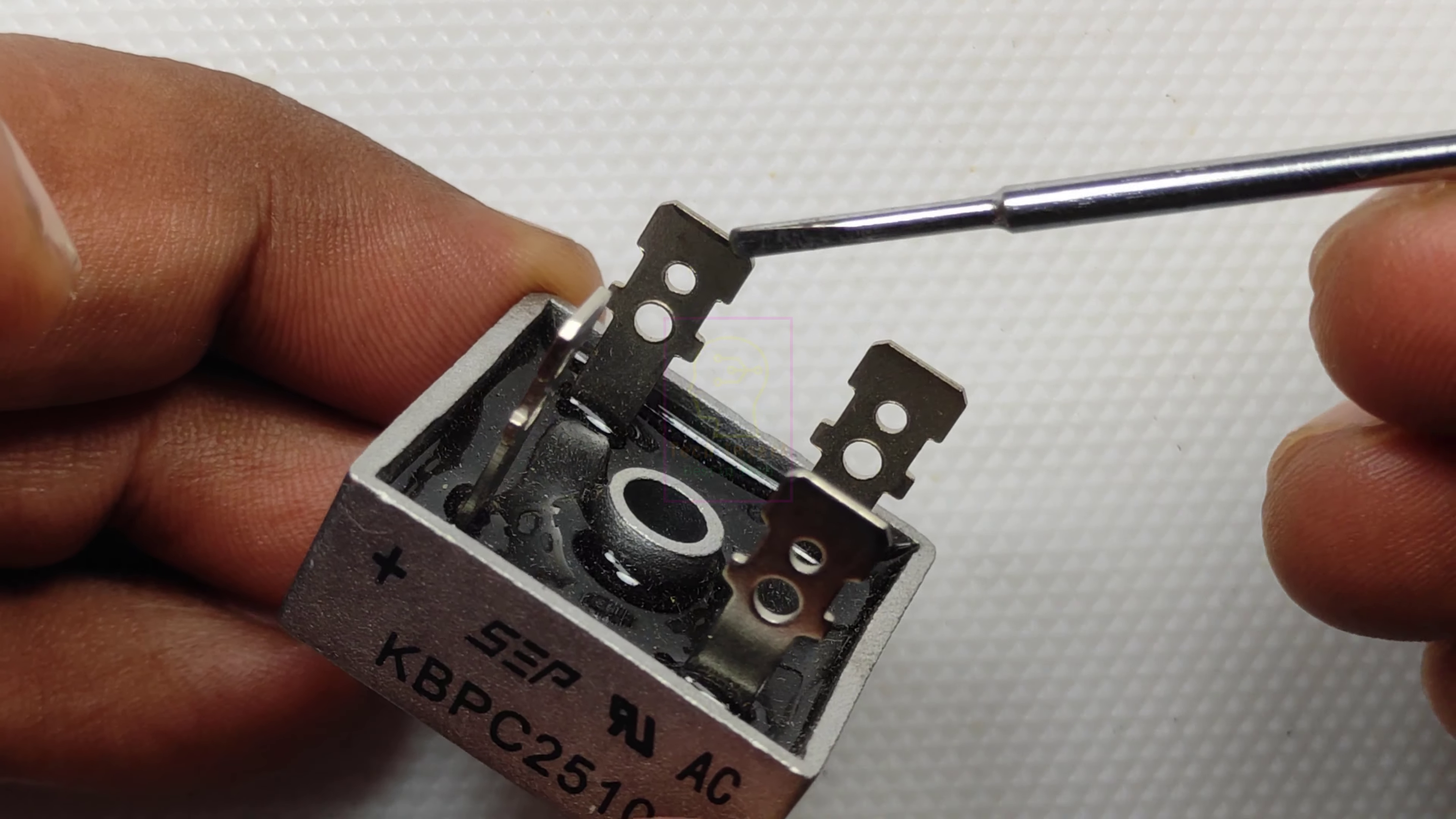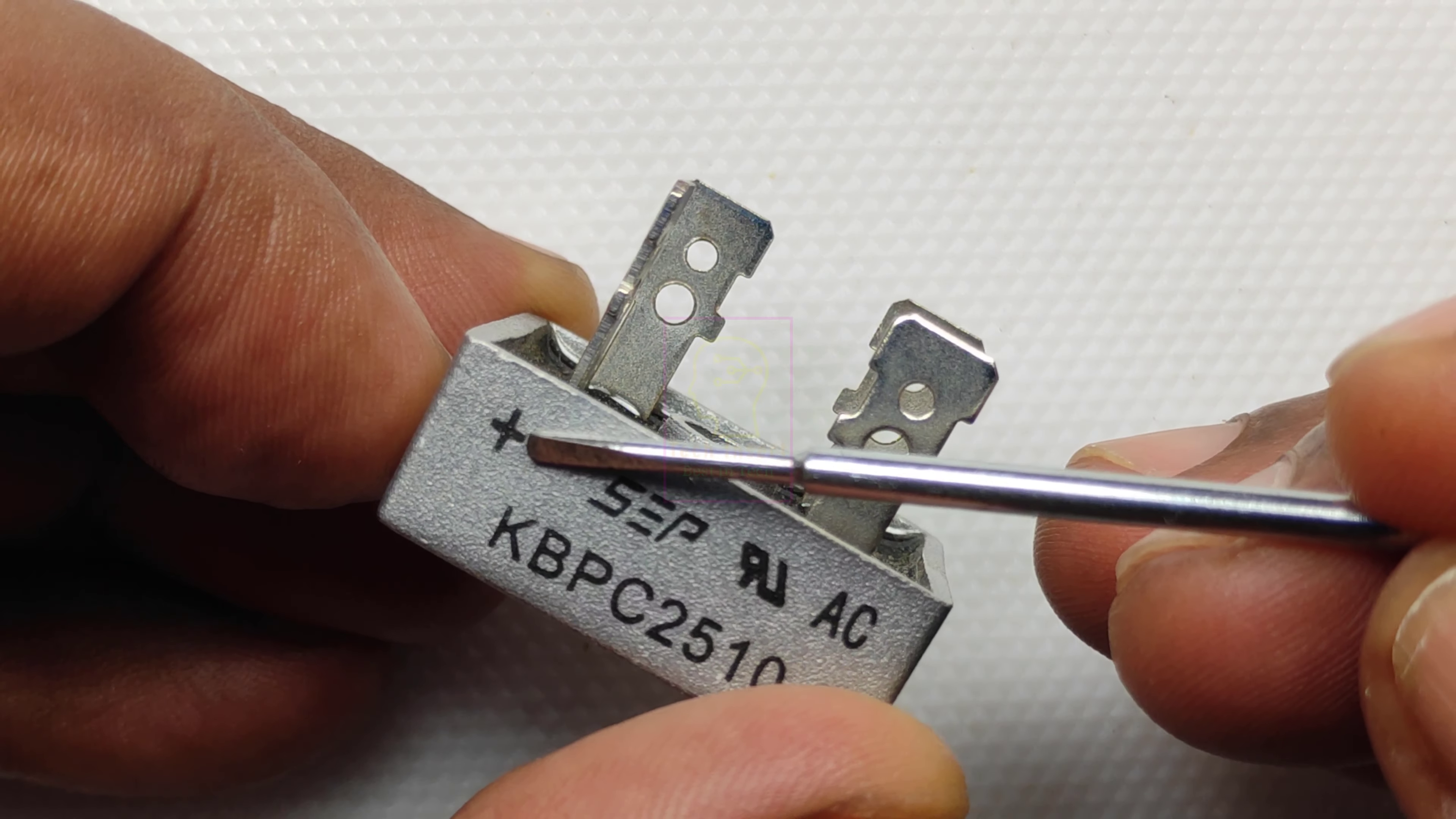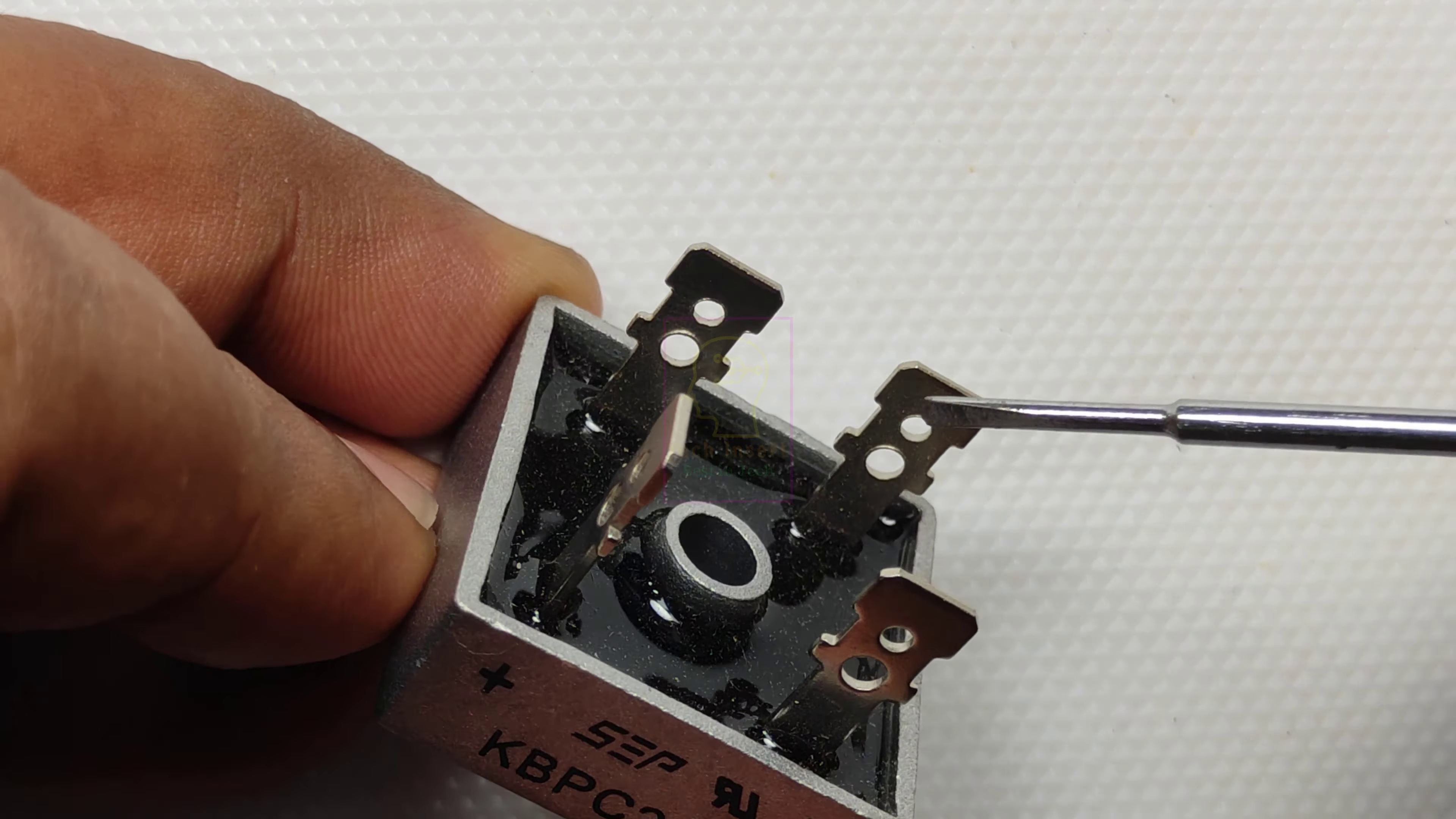You can see one pin is marked as AC. That pin and its diagonal pin are input AC terminals. In some rectifiers they will mark both pins as AC, but here they have marked only one pin. So the other pin is the diagonal pin.